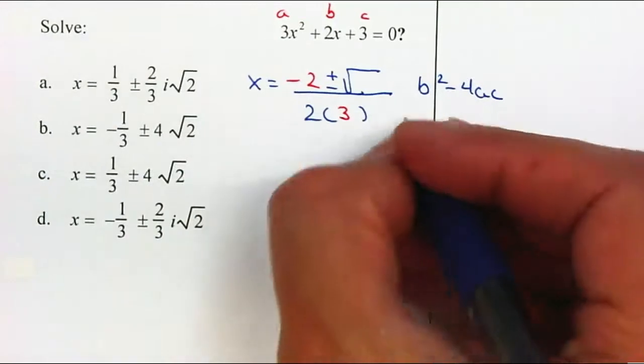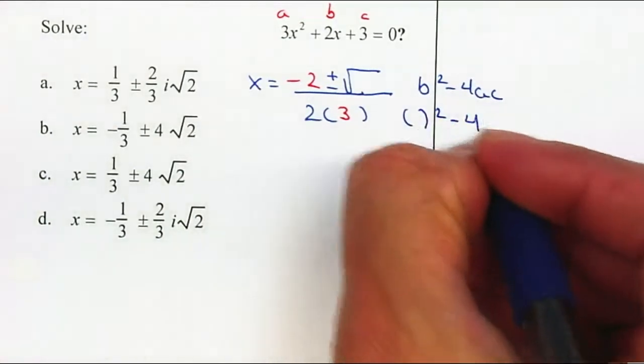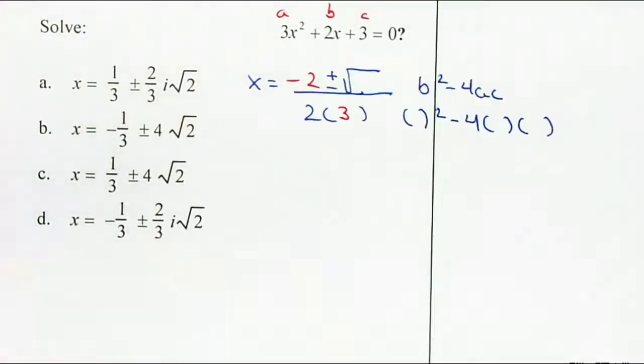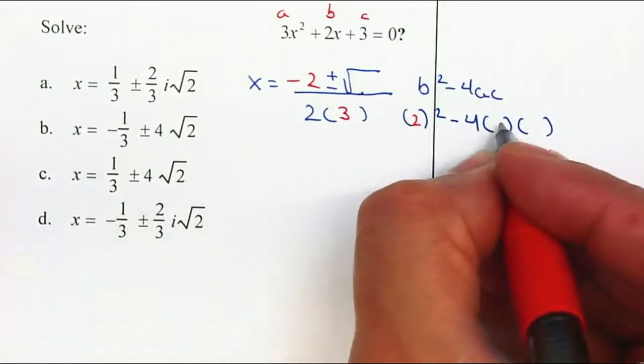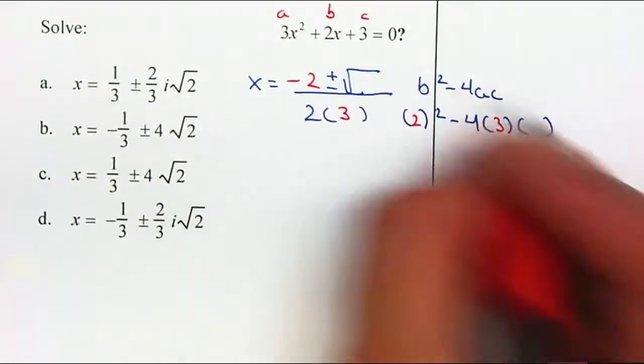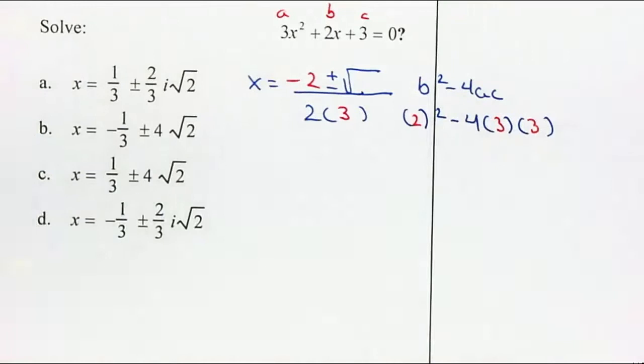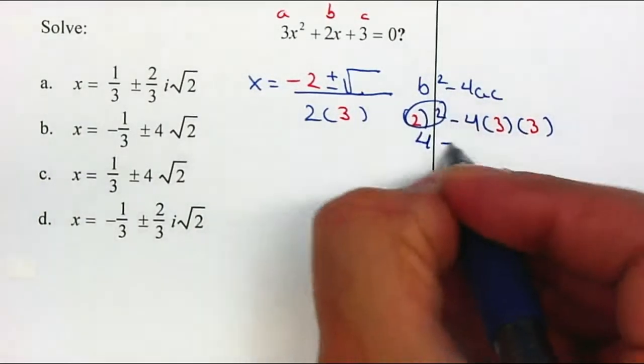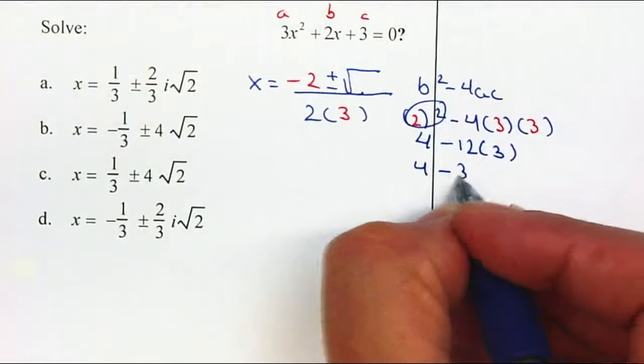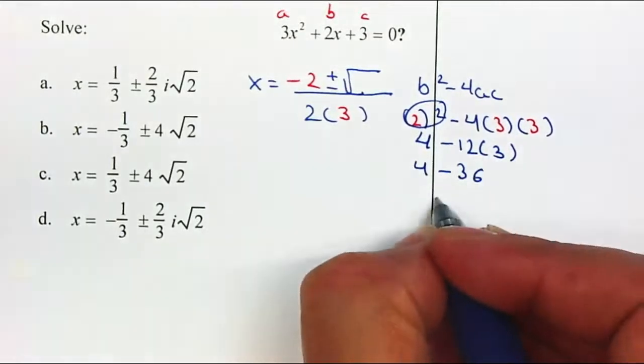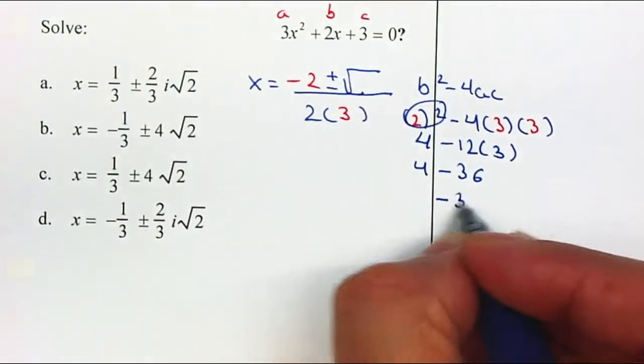And let's see, b squared minus 4ac. We can place the b is 2, the a is 3, and the c is also 3. Simplify this, gives us a 4 minus 12 times 3, 4 minus 36. This will give us a negative 32.